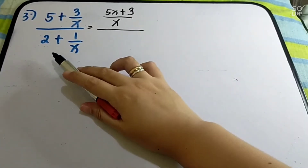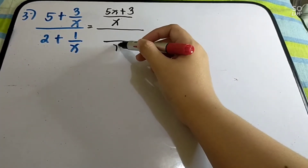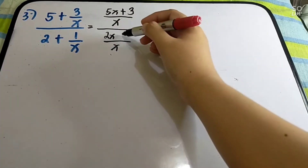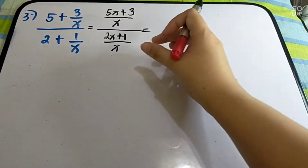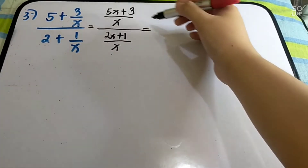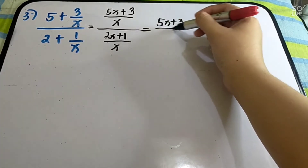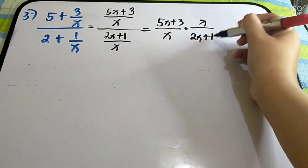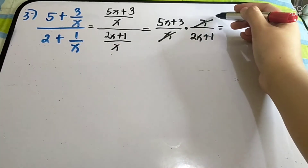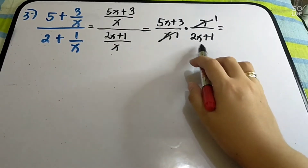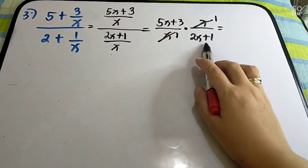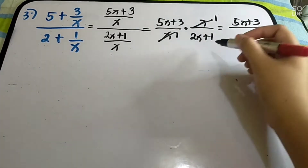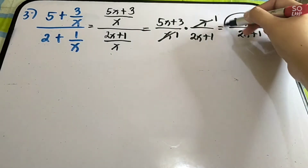Then simplify the denominator similarly with LCD of x. We have x times 2 giving 2x, and x divided by x is 1 times 1 giving plus 1, so the denominator becomes (2x + 1) over x. Afterwards, reciprocal the denominator. Copy the numerator: (5x + 3) over x, multiplied by the reciprocal x over (2x + 1). Cancellation — the x's cancel out, giving 1. So the final answer is (5x + 3) over (2x + 1).